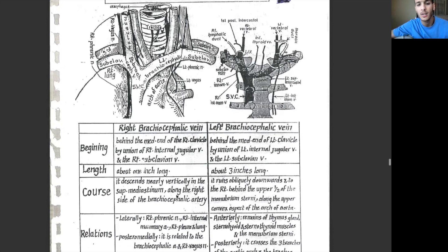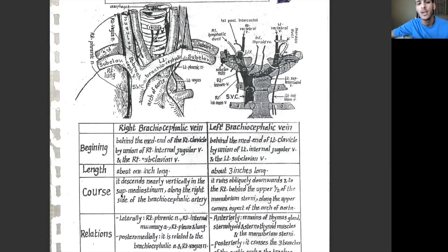The length of the right brachiocephalic vein is about one inch — it's very short — and it descends nearly vertically in the superior mediastinum along the right side of the brachiocephalic artery. The mediastinum is basically the space that lies within the lungs, made up of superior, middle, and inferior parts. The brachiocephalic veins are present in the superior mediastinum, along the right side of the brachiocephalic artery.